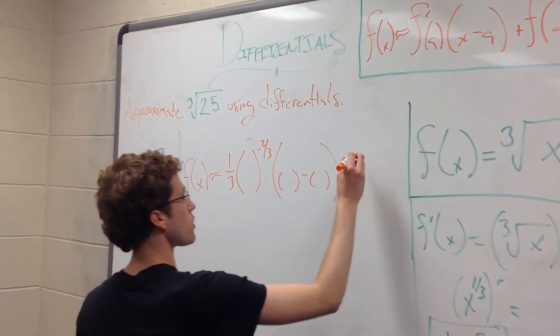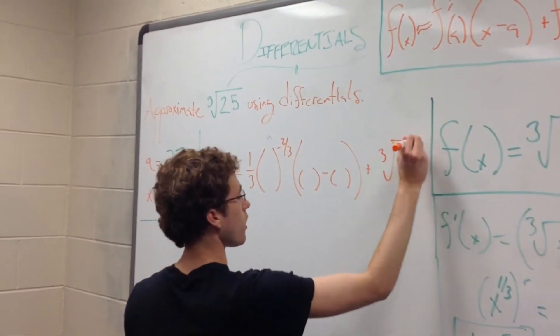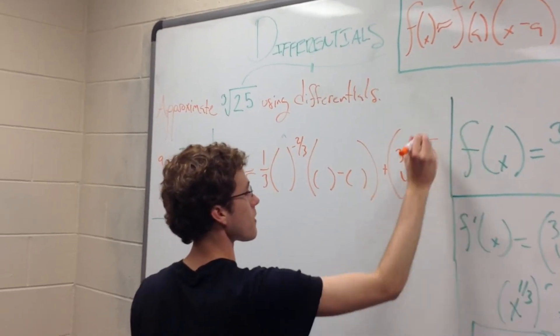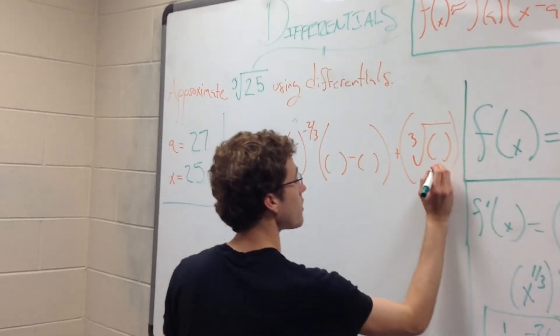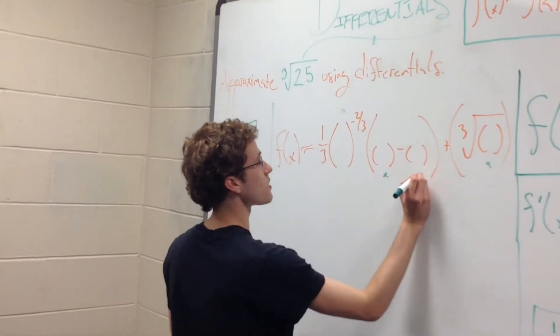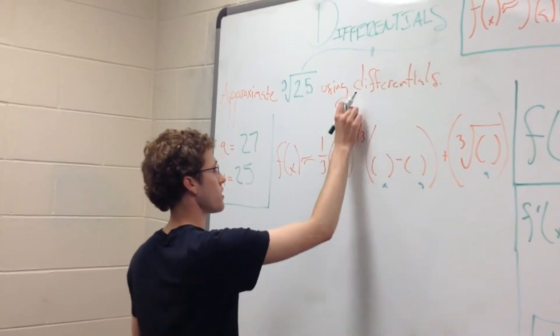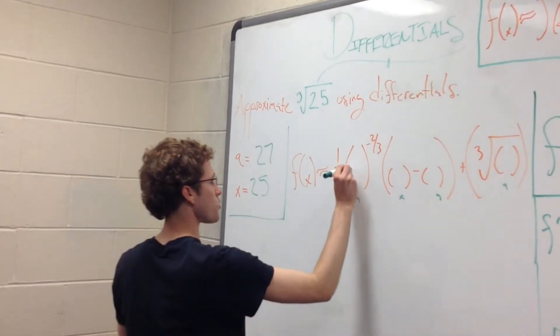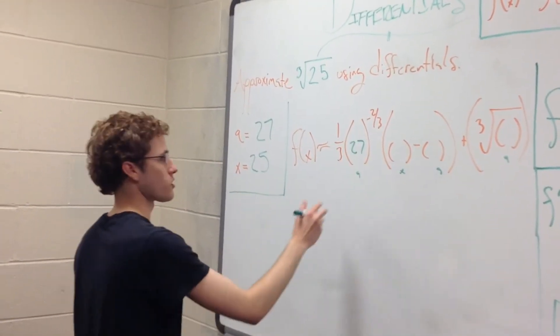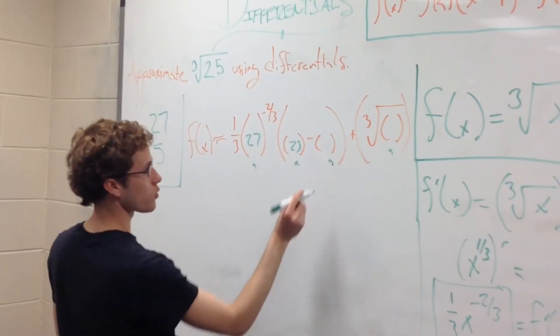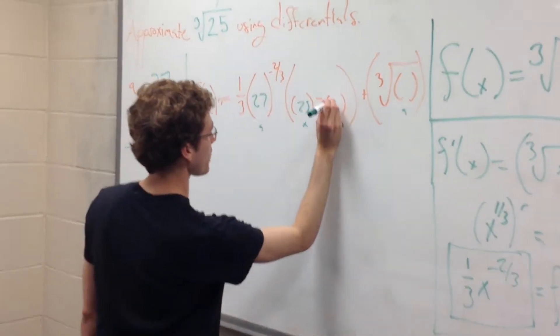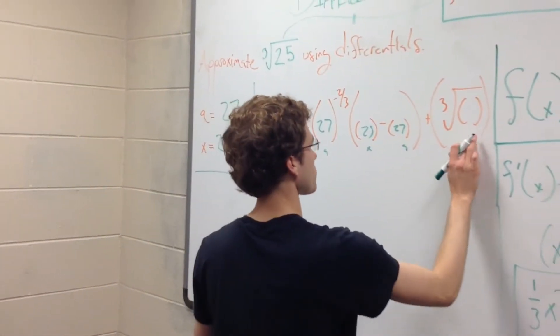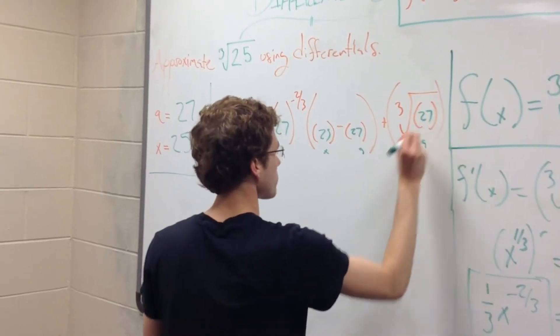So the cube root of a. This is a, this is x, this is a, and this is a. So our a is 27, we put 27 here. Our x is 25. We have 27 here again because it's our a. We have another 27 here because we have a here as well.